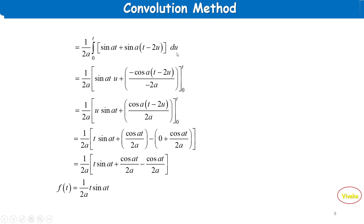Integrating with respect to u using the product-to-sum identity: sin(at)·u term and cos(at−2au)/(−2a) term, evaluated from 0 to t. After applying the upper and lower limits and simplifying.